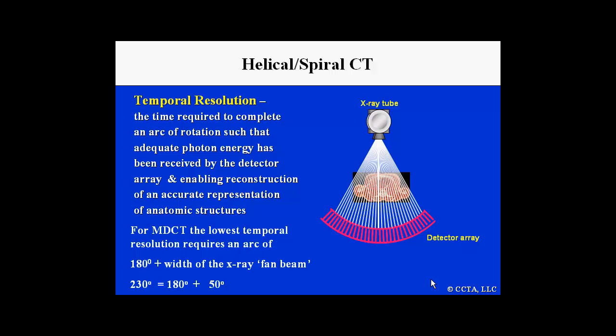For multidetector CT, the lowest temporal resolution requires an arc that includes 180 degrees plus the width of the X-ray fan beam. For a multidetector CT, this is approximately 50 degrees for the fan beam. Thus, the total arc necessary to complete an entire set of images is actually 230 degrees.